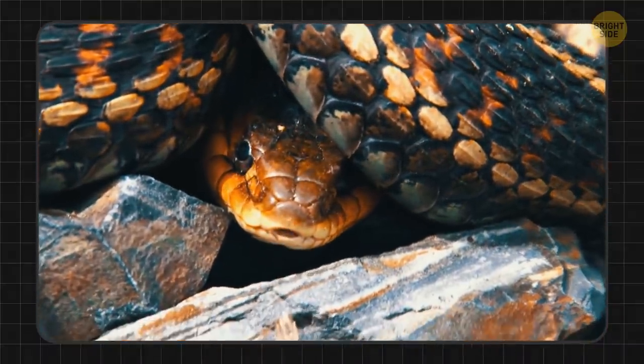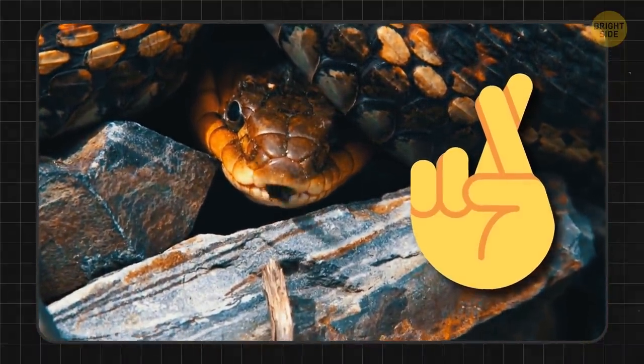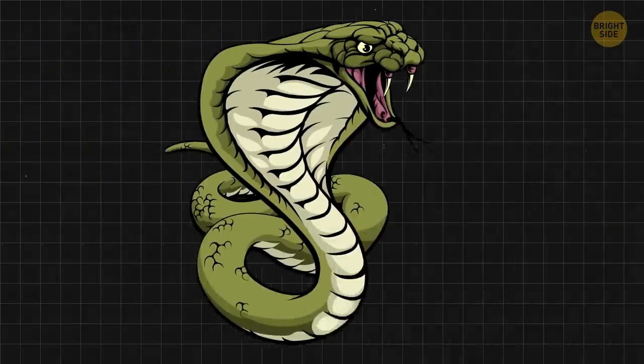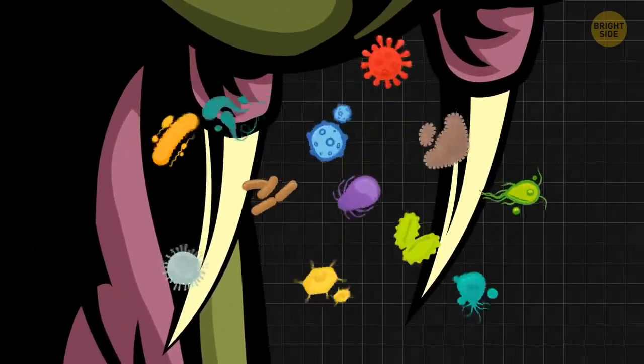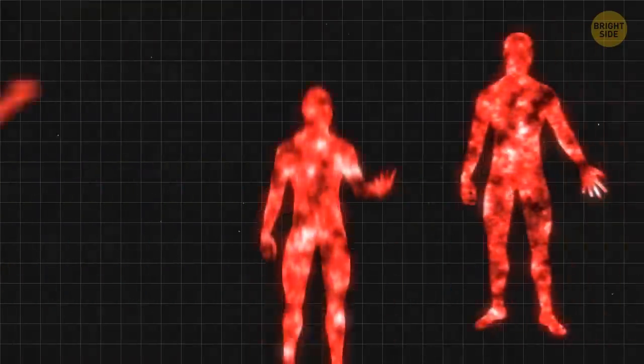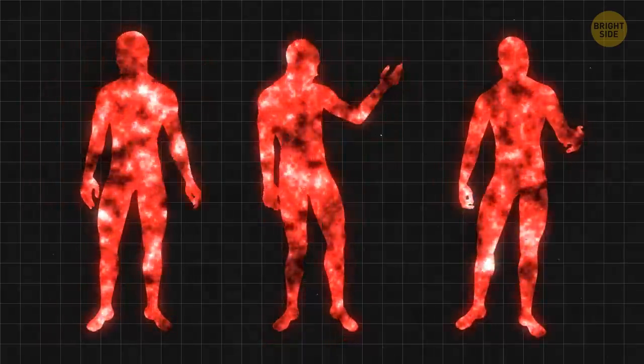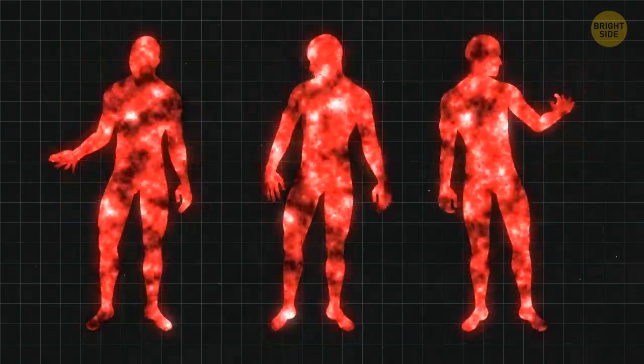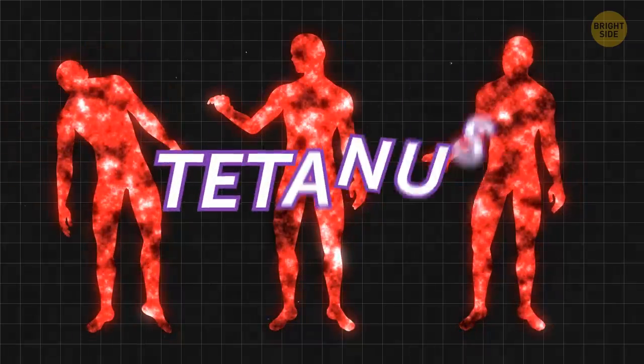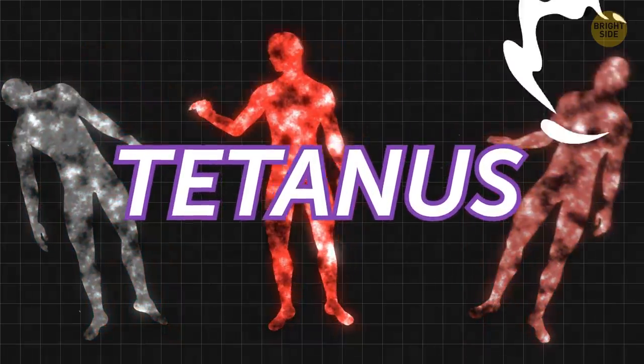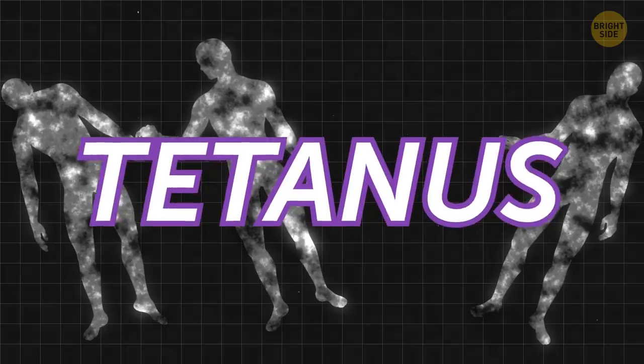If it wasn't venomous, consider yourself lucky. You're probably gonna be fine. Still, any snake's fangs carry thousands of bacteria on them, and when they penetrate the skin, these little pests get into your blood to wreak havoc inside your body. The most terrifying of them cause tetanus, a severe condition that's incurable if you don't get medical help in advance.